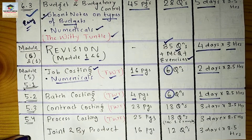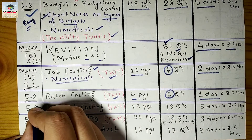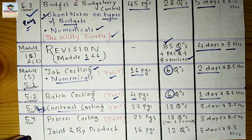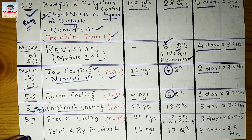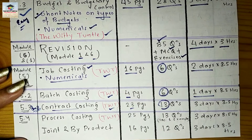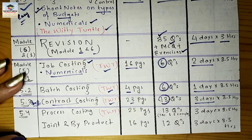After that, the next chapter is Contract Costing, which is very important — every year one 8-mark question comes from this chapter. It takes a bit of time to understand, but once you have, you can solve every question. Find it on my YouTube channel. It has 23 pages and 13 questions to solve, and it will take you three days to complete.